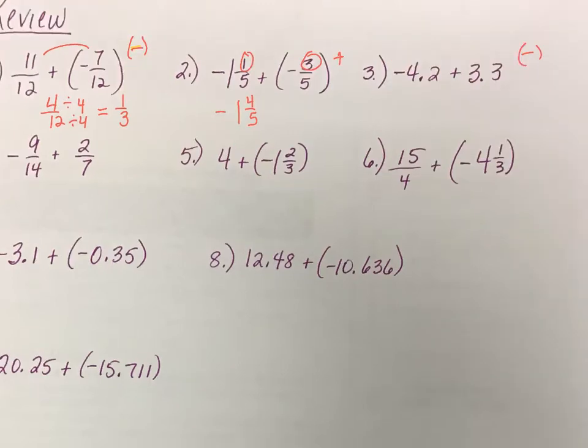When we subtract these, take the absolute value of both. Which one's bigger? 4.2, right? So we're going to take 4.2 minus 3.3. Cannot take 3 from 2, I've got to borrow. That's a 9, that's a 0. Take the sign of the one on top, which is negative.